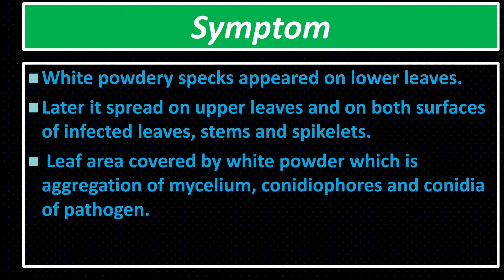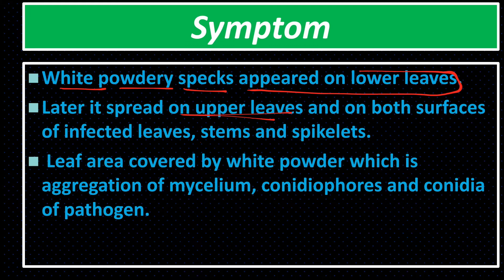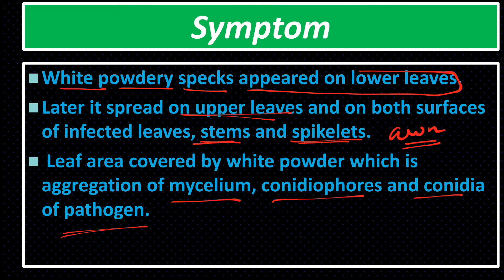Coming to the symptoms: white powdery specks appear on the lower leaves. Later it spreads to the upper leaves, stems, spikelets, and also on the awns. The leaf area is covered by white powder, which is an aggregation of mycelium, conidiophores, and conidia of the pathogen. Later, the pathogen causes necrosis in the leaves, resulting in early defoliation.